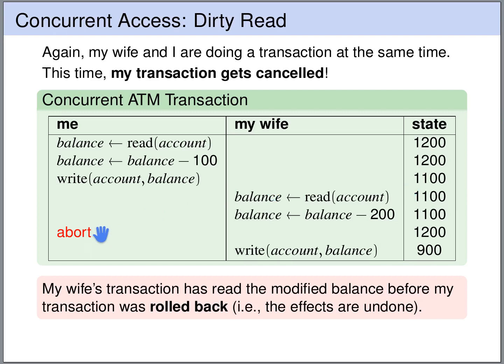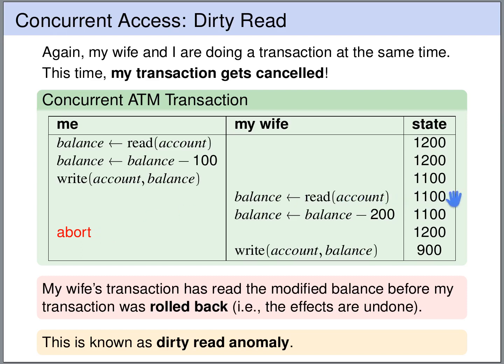This is known as a dirty read anomaly. The value my wife's transaction read was not a value that was committed to the database — it had been updated but the transaction that updated it was later aborted and the update was undone. So the read that happened here was a dirty read: it read a value that was never committed to the database.